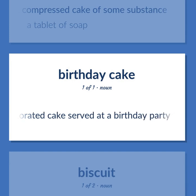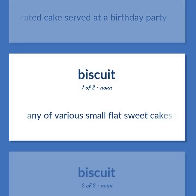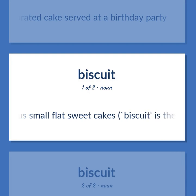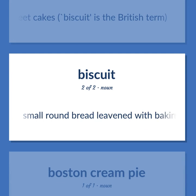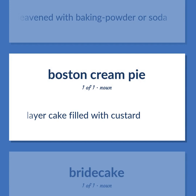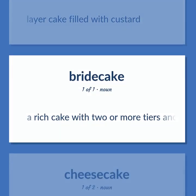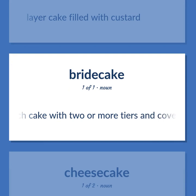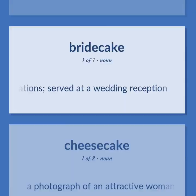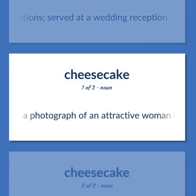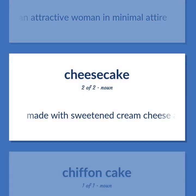Decorated cake served at a birthday party. Any of various small flat sweet cakes — biscuit is the British term. Small round bread leavened with baking powder or soda. Layer cake filled with custard. A rich cake with two or more tiers covered with frosting and decorations, served at a wedding reception. A photograph of an attractive woman in minimal attire. Made with sweetened cream cheese and eggs and cream baked in a crumb crust.